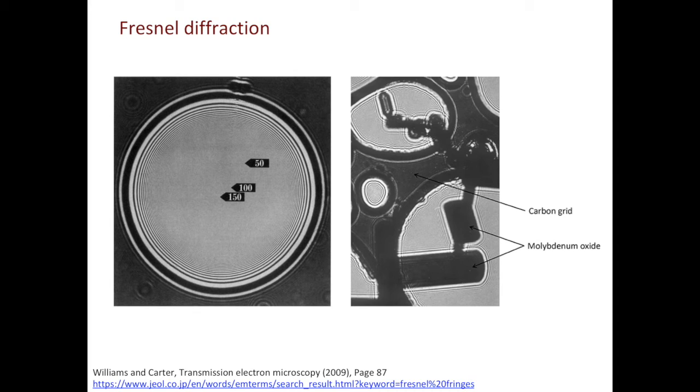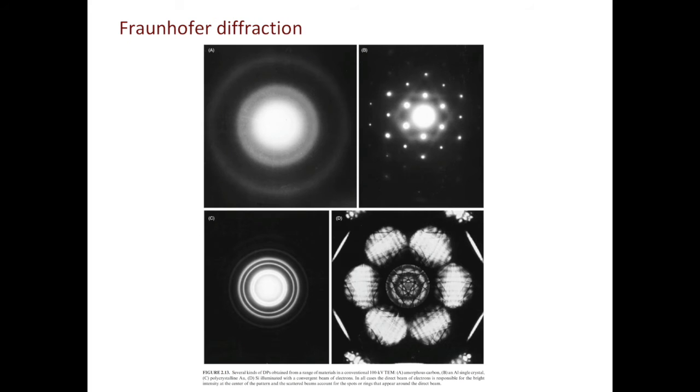Moving to Fraunhofer diffraction. In fact, all the diffraction patterns we acquire in TEM, they are from Fraunhofer diffraction. Here are four examples of diffraction patterns from the Williams and Carter book. In the first example, you see diffuse rings, and this tells us the sample is amorphous.